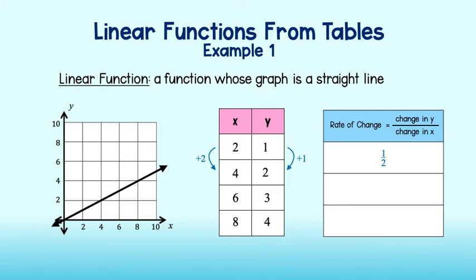What about the rate of change between the remaining points? Well, to get from 2 to 3, I also add 1. And to get from 4 to 6, I add 2. Again, the rate of change is 1 half. Lastly, I can add 1 to get to 4, and add 2 to get to 8. The rate of change, again, is 1 half.